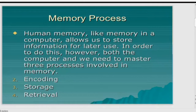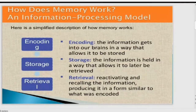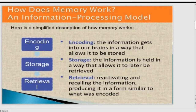Our human memory is like a computer which allows us to store information for later use. In order to do that, we need to master three processes involved in memory: encoding, storage, and retrieval. Encoding is taking information into our brain in a way that allows it to be stored — we are welcoming memory to come into our brain from our environment.